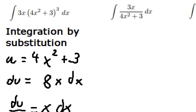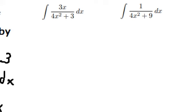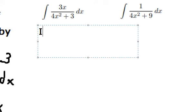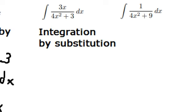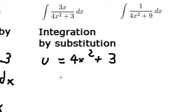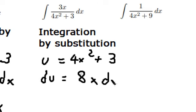Now let's go to the second one. We use integration by substitution. We put u equal to 4x squared plus 3. We do the first derivative. Because we don't have number 8, so we divide both sides by number 8.